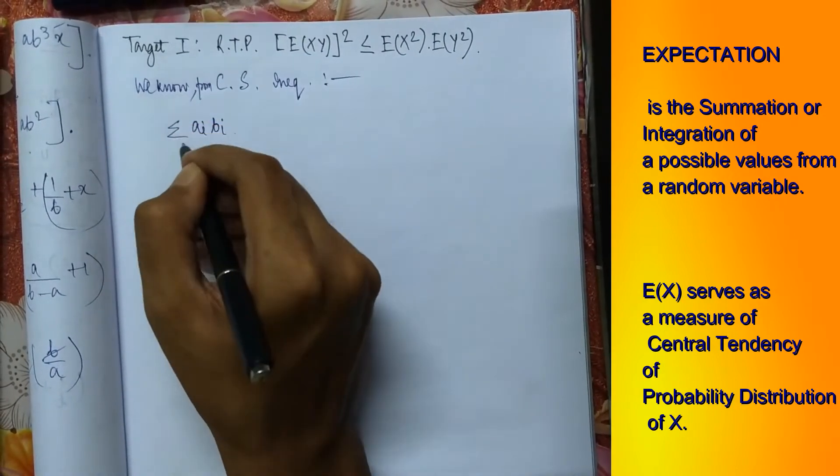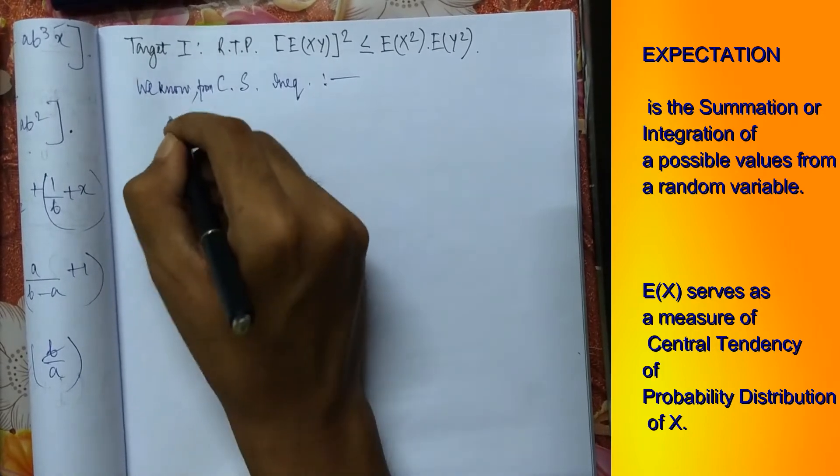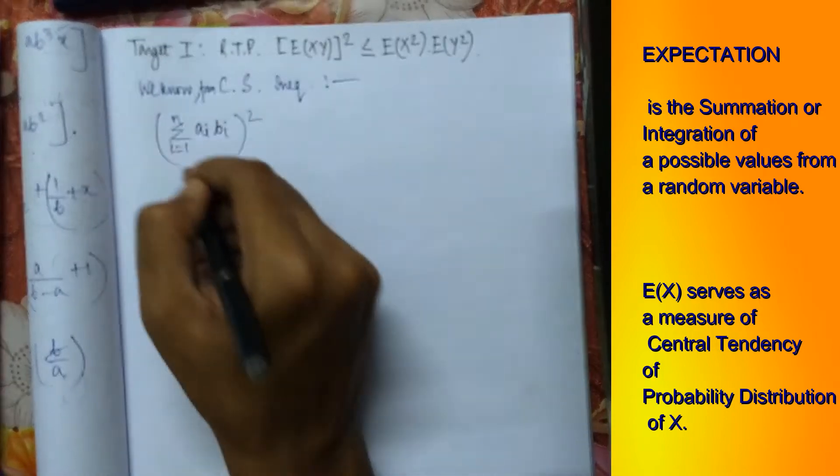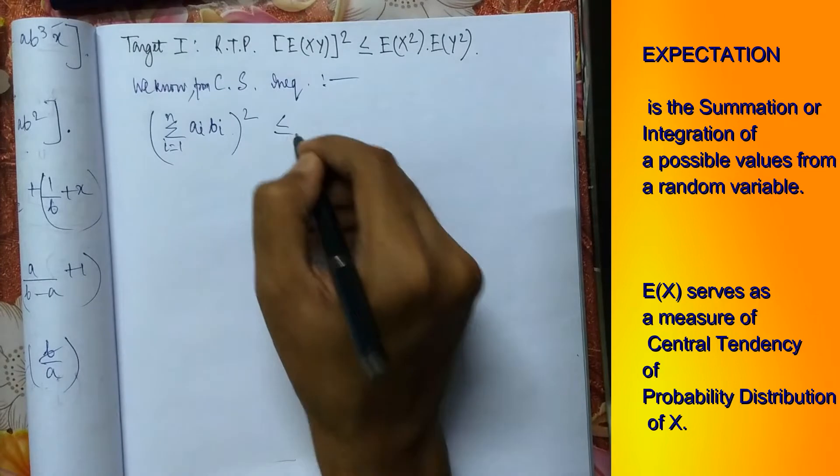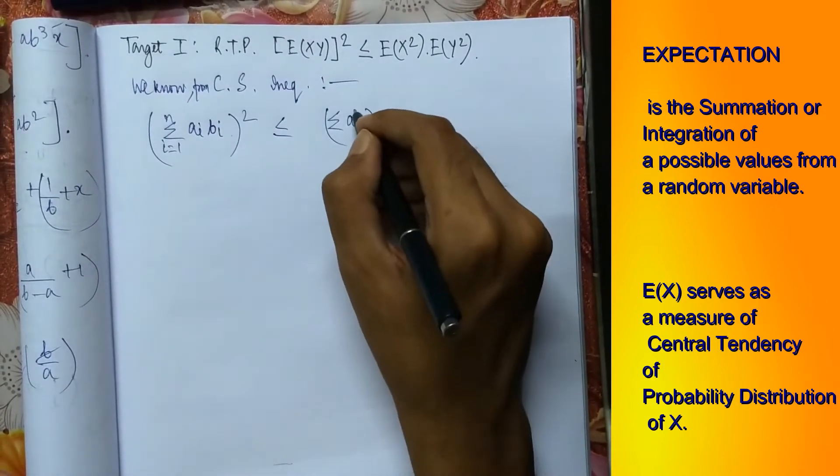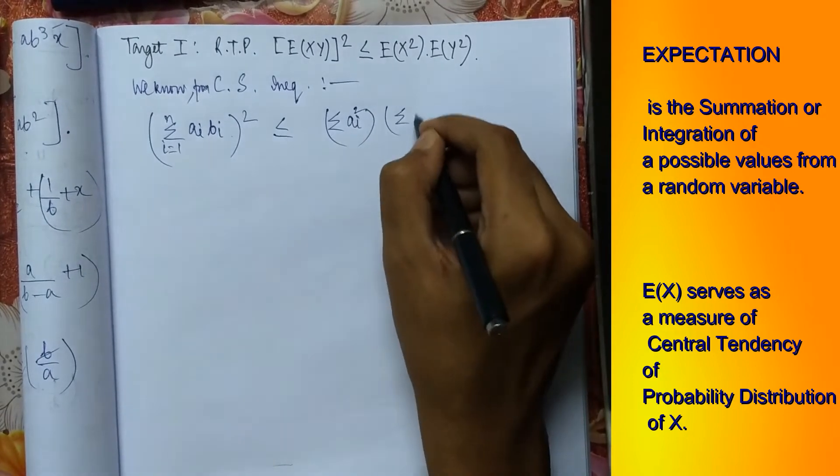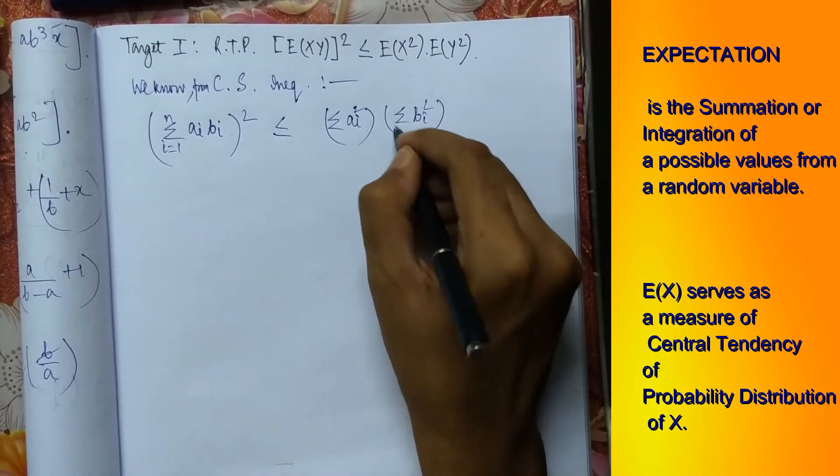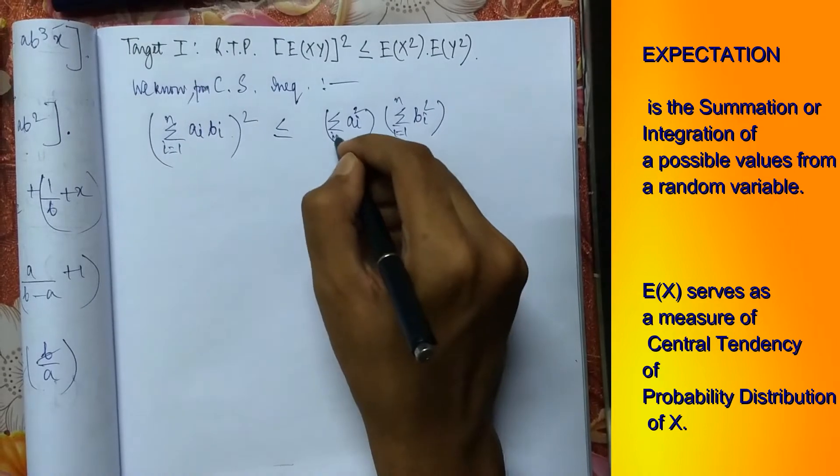ai bi, since we are taking ai bi we will provide here a summation i running from 1 to n whole square less than equals summation ai square summation bi square where i runs from 1 to n in both the cases.